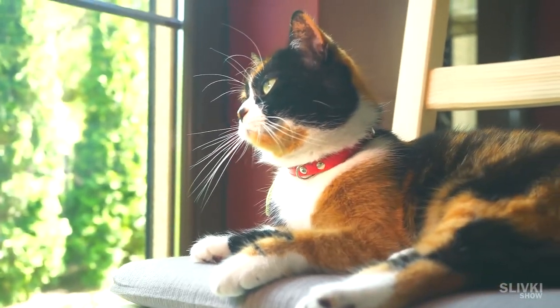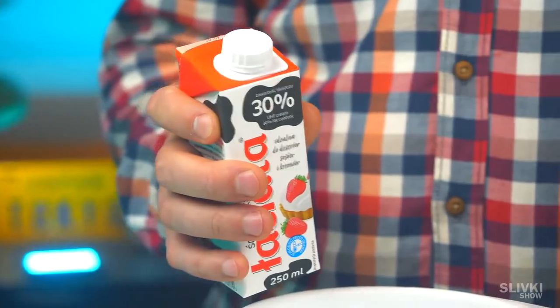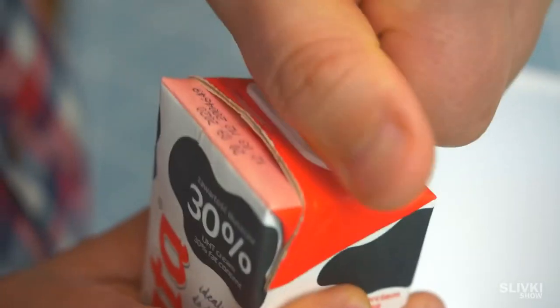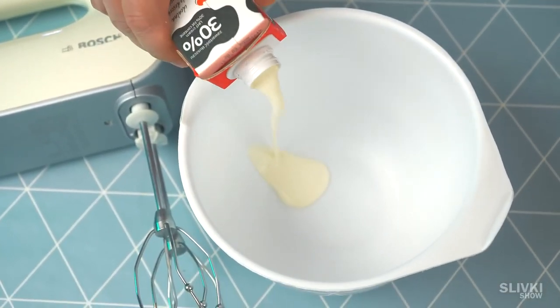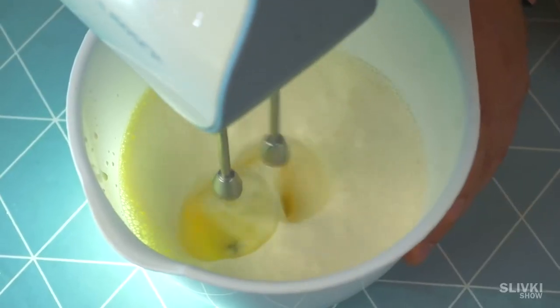Now I'll show you a delicious recipe with just three ingredients. You need a mixer and a container, where you need to put around 250 ml of cold cream from a fridge. Next, you gotta mix it until it becomes light whipped cream.